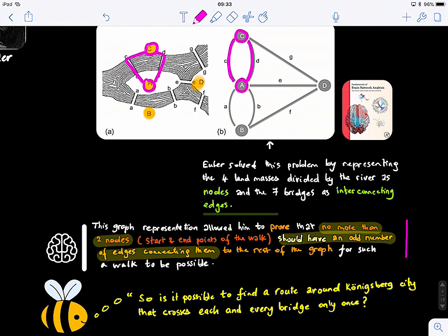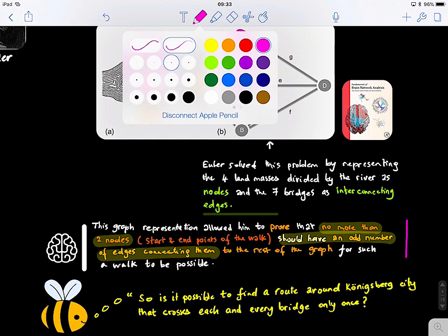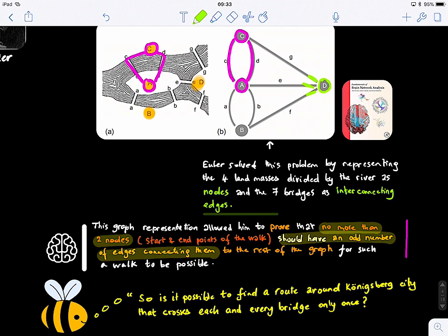The question is, how many nodes in this graph have an odd number of edges connecting them to the rest of the graph? For example, node D, how many edges does it have? One, two, three. That's an odd number. How many nodes have an odd number here of edges? We have three, five, and three. All of them odd. He said the condition is like no more than two. You have more than two that have odd connections to other nodes. For this reason, it's not possible to have that walk in this city.